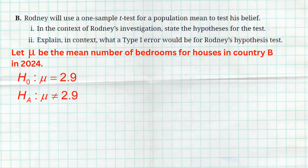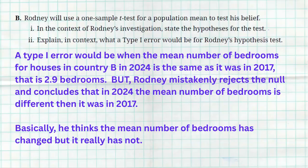The second part of B asks us to explain in context what a Type I error would be. A Type I error is when the null is true — the mean really is 2.9 — but we mistakenly reject it. So a Type I error would be: the mean number of bedrooms in Country B in 2024 is the same as in 2017 (2.9), but Rodney mistakenly rejects the null and concludes the mean number of bedrooms in newly built houses was different than it was in 2017. Basically, he thinks the mean has changed, but it really has not.